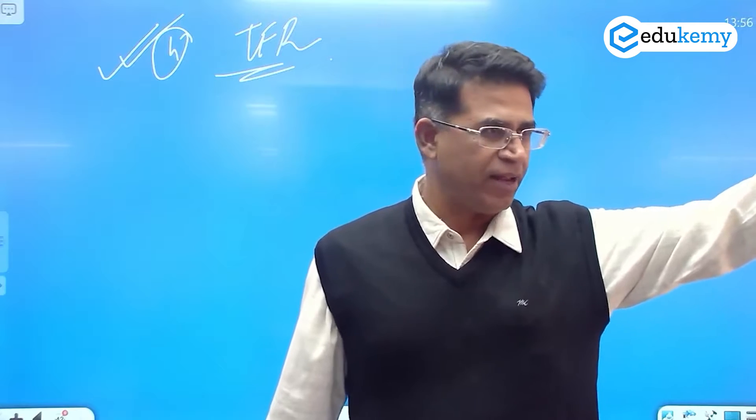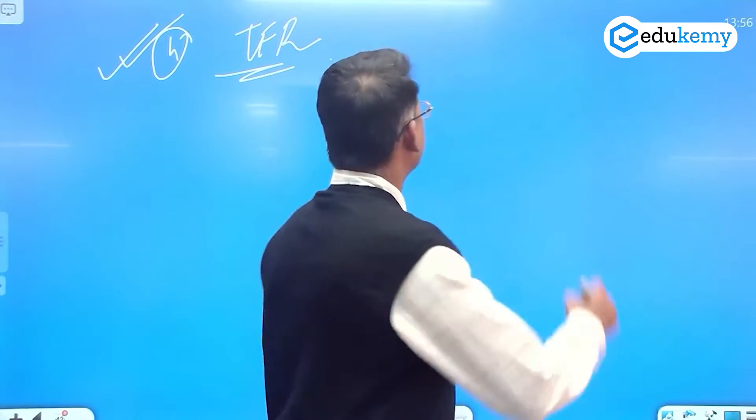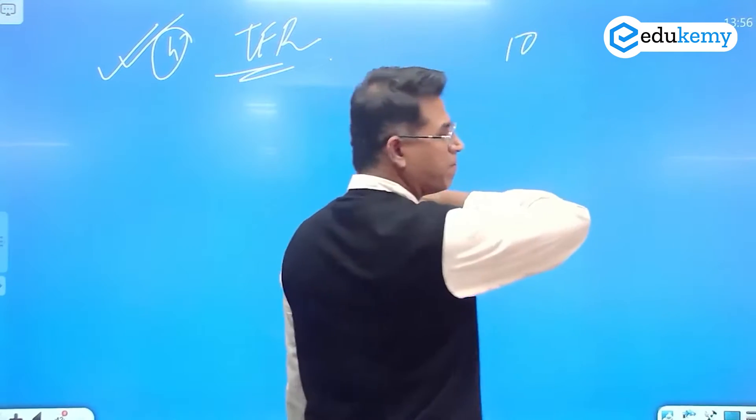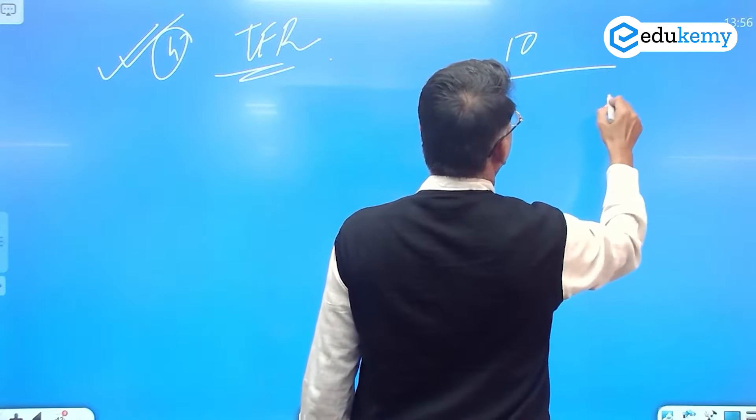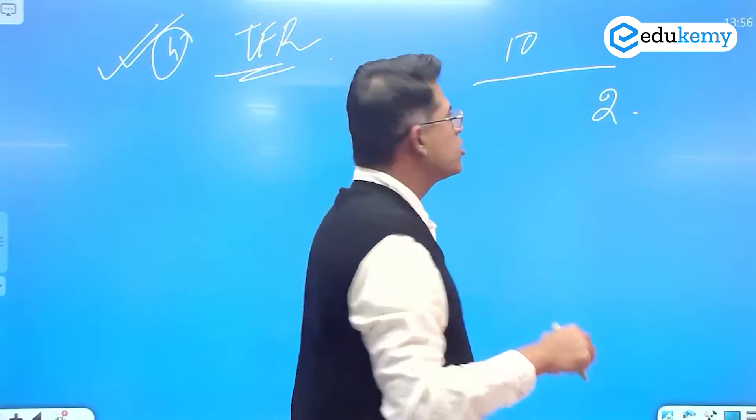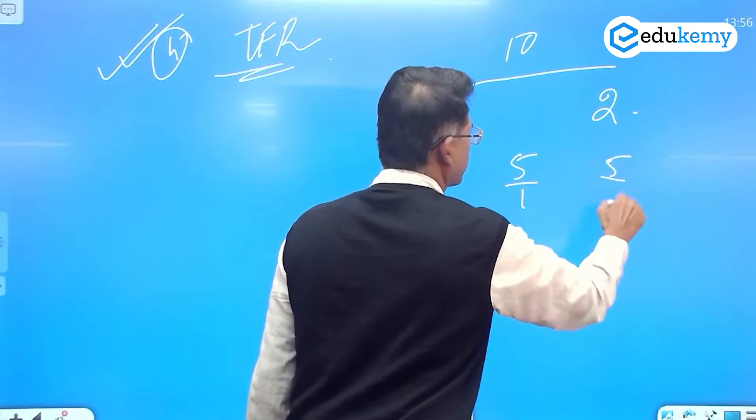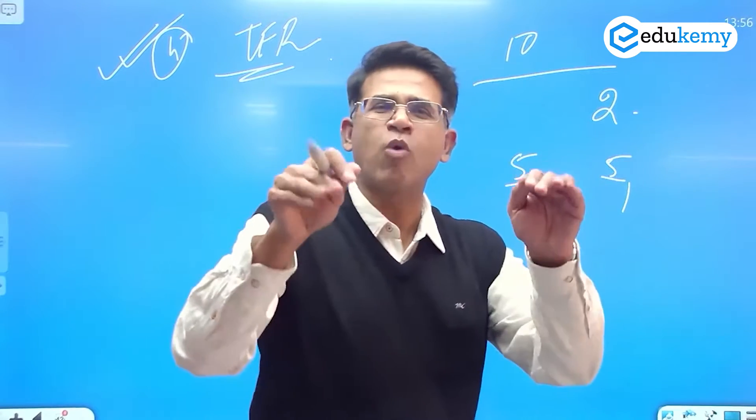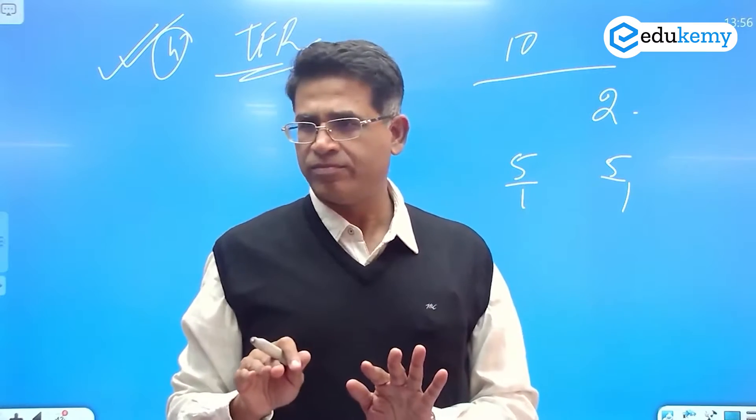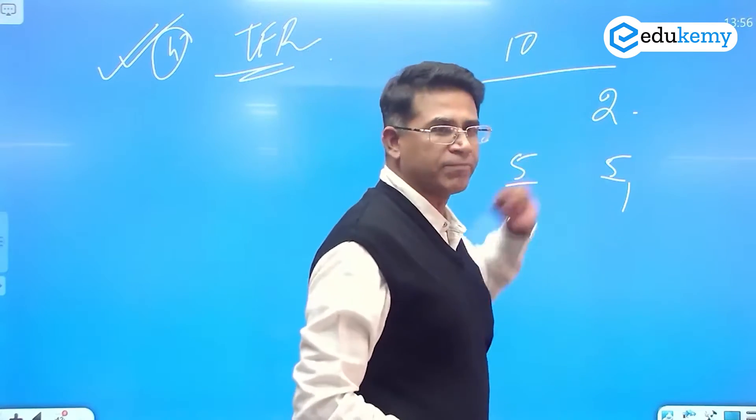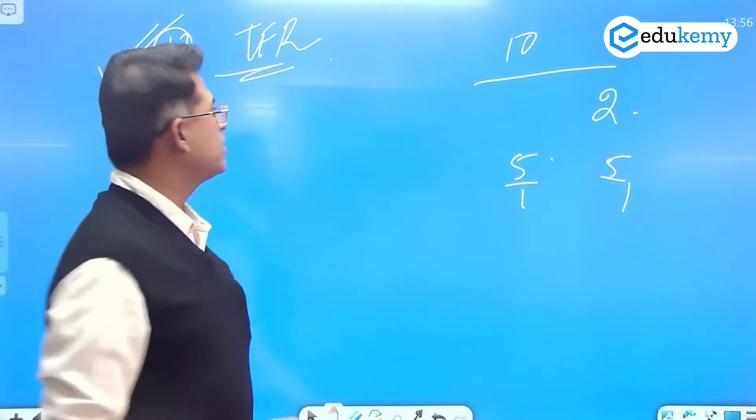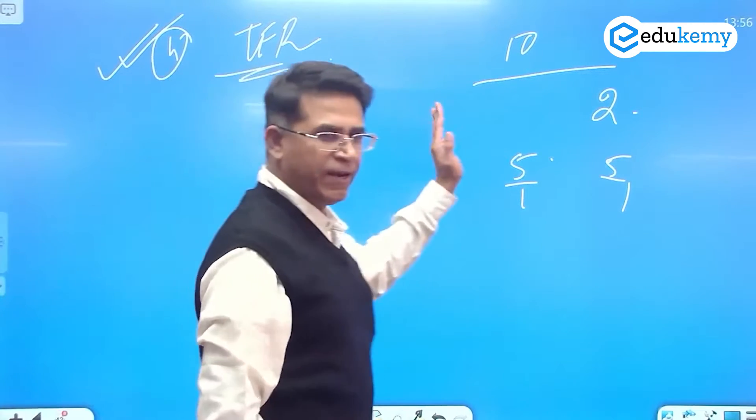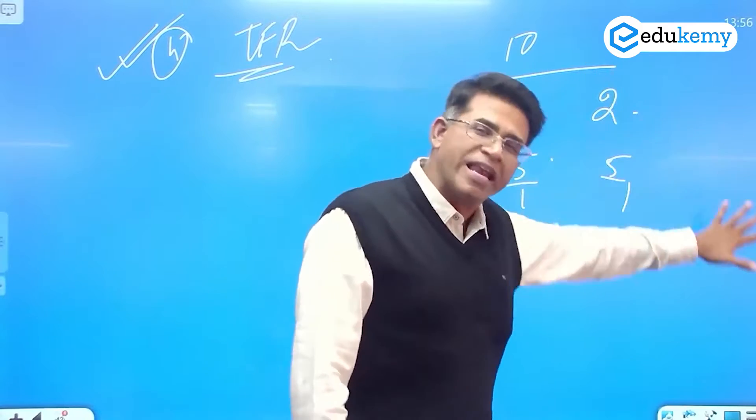Have you got the point here? Say there are 10 children and there are, say, two mothers. So I say there are five children per mother. This is what I have right now, number of children per mother. TFR is the number of children a woman will have.